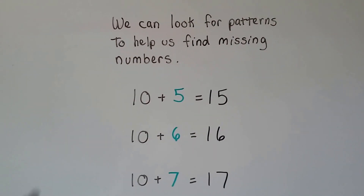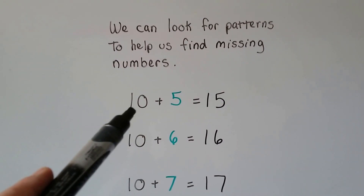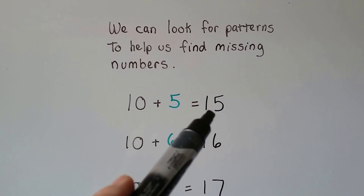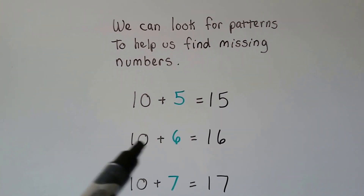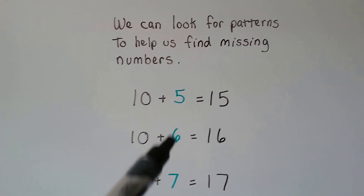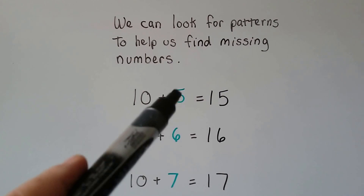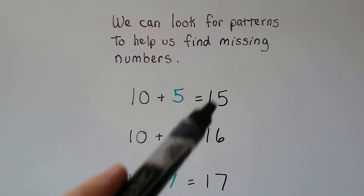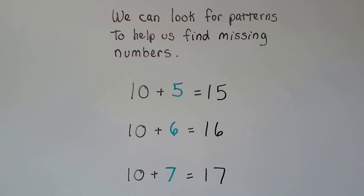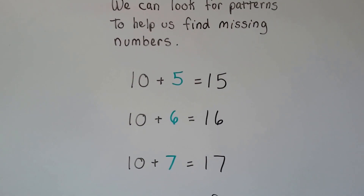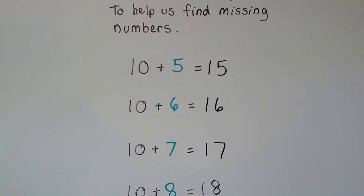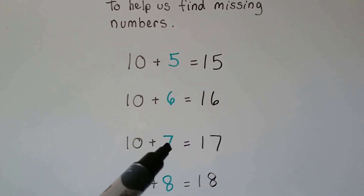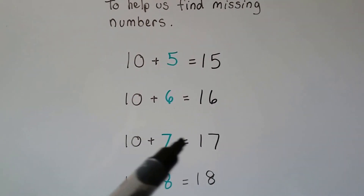10 plus 5 equals 15. 10 plus 6 — that's one more than 5, so it would be one more than 15, it would be 16. 10 plus 7 — 7 is one more than 6, so it's going to be one more than 16, it's going to be 17.